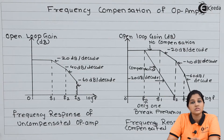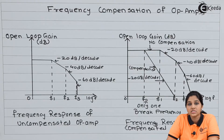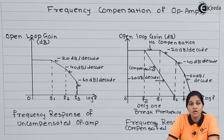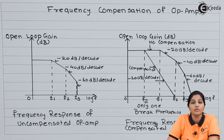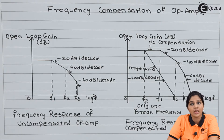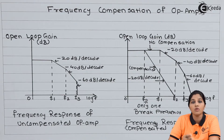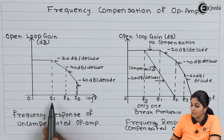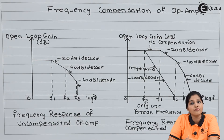In case of uncompensated op-amp, the internal capacitance is not present, therefore there are more than one break frequency, which makes the circuit unstable. The break frequencies depend upon the number of stages, with each individual stage having a different frequency response. If we look at the graph, we can see that f1, f2, and f3 are the different break frequencies present in case of uncompensated op-amp.